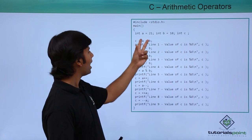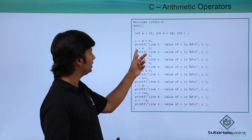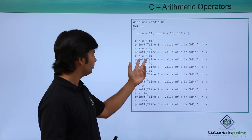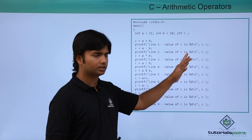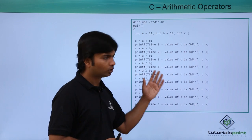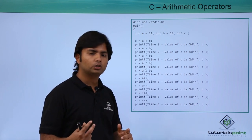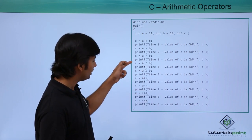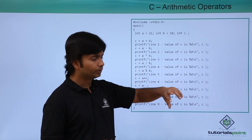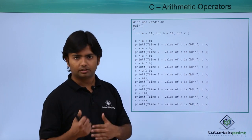First we add two numbers: 21 and 10 will be added. Similarly, a minus b means subtraction will be done. Then a multiplied by b means 21 will be multiplied by 10. In line 4, the slash symbol gives the quotient: dividing 21 by 10 gives 2 as the quotient and 1 as the remainder. In line 5, using the modulus symbol we get 1, which is the remainder.